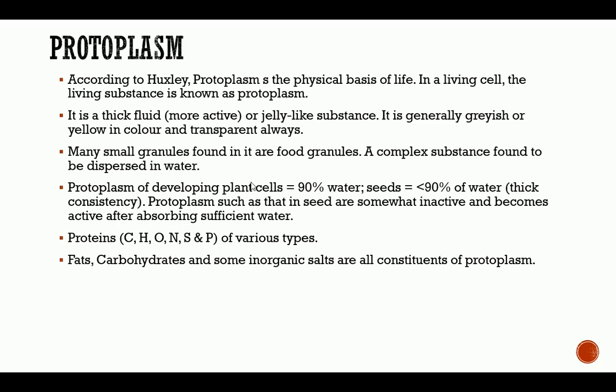The protoplasm of developing plant cells constitutes about 90% water, while the protoplasm in seeds contains less than 90% water, giving it a thick consistency. In seeds it is in an inert form because it is jelly-like and less active. The dormant seed contains jelly-like protoplasm and is thus inactive. The protoplasm becomes active after absorbing sufficient water — and that is the point of germination of seeds.